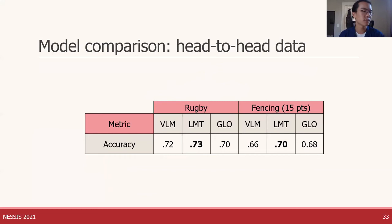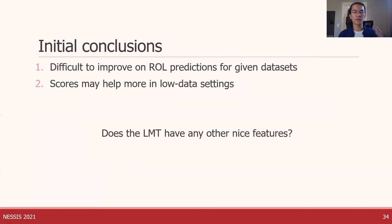For the head-to-head sports, the metric is accuracy of winner predictions, comparing the DLM-based methods to Glicko (abbreviated GLO), which is a slightly modified version of ELO. The story is much the same — all three models perform roughly the same, though LMT may have a slight edge.